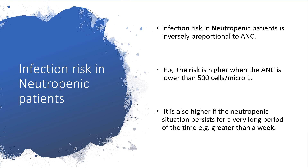Infection risk in neutropenic patients is inversely proportional to absolute neutrophil count. The higher the level of neutrophils, the less the risk of infection. The lower the level of neutrophils, the higher the risk of infection. The risk is higher when the absolute neutrophil count is lower than 500 cells per microliter. It is also higher if the neutropenia persists for a very long period of time — for example, more than a week.